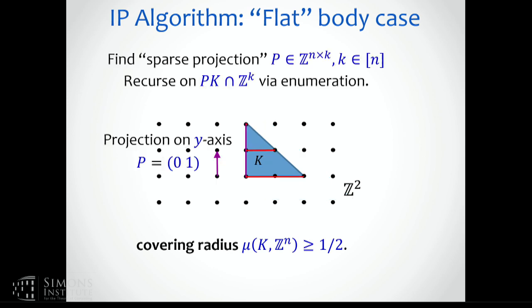The issue is the other case: when the body is not fat — we'll say it's flat. In this case we decompose the feasible region. For those who have seen these types of algorithms, in the flat case you try to decompose the region along integer hyperplanes. There is a slightly more general strategy you can take, which you can index using the enumeration tool described at the beginning.